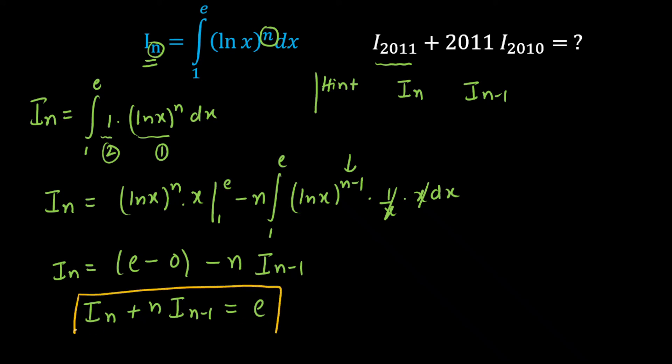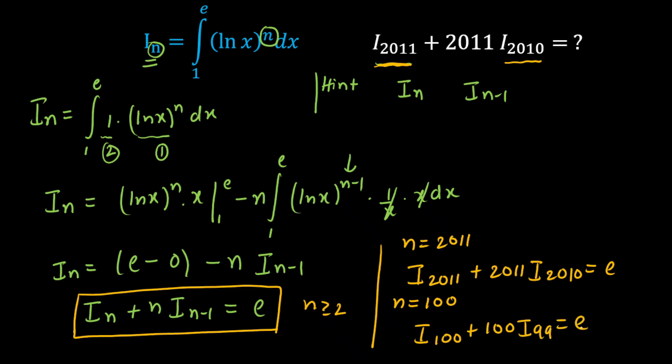This is the relation. And this relation will be valid for n greater than or equal to 2. You can observe here. Now, in the question, as I told you, we will be getting a relation between I of n and I of n minus 1 when I have given you the hint. Now when you put here in this relation, when you put n equals 2011, automatically you will get this as I of 2011 plus 2011 times I of 2010. This will be equal to e. Now if you check the option, one of the option is true when you put n equals 100. So when you put n equals 100, this will be equal to I of 100 plus 100 times I of 99. So this will be always equal to e. And option C is correct. So this will be our final answer. And that will be all.